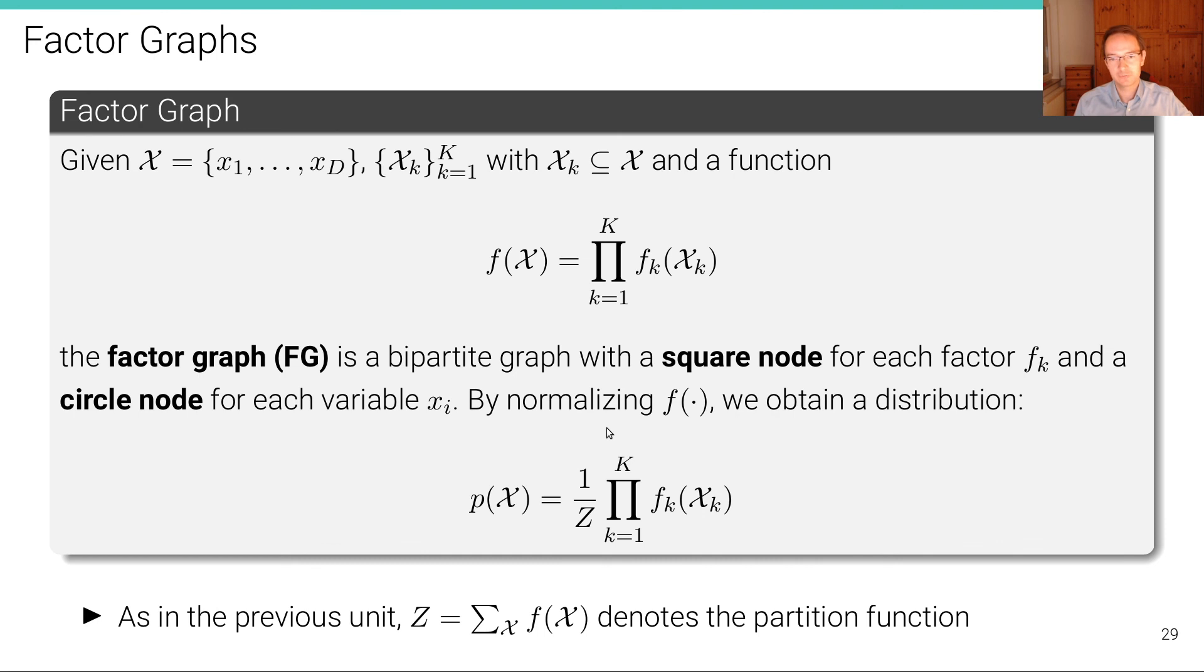And similar to before, by normalizing F we obtain a distribution. So we simply have the probability distribution over x, over the set of random variables, is equal to F of x over this partition function C, where the partition function is just summing up F over the entire state space of all the random variables jointly. Or in the case of continuous variables, we are having an integral here.